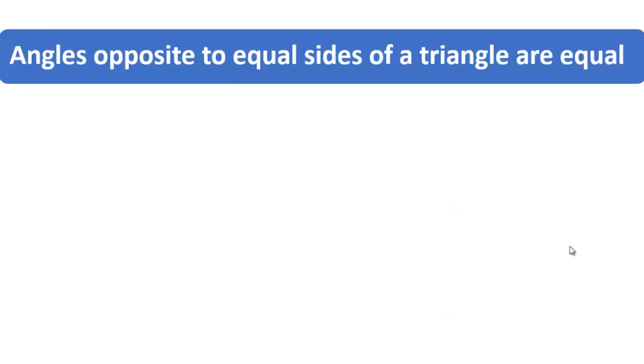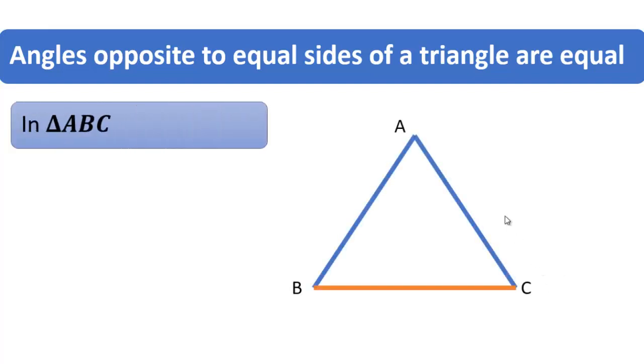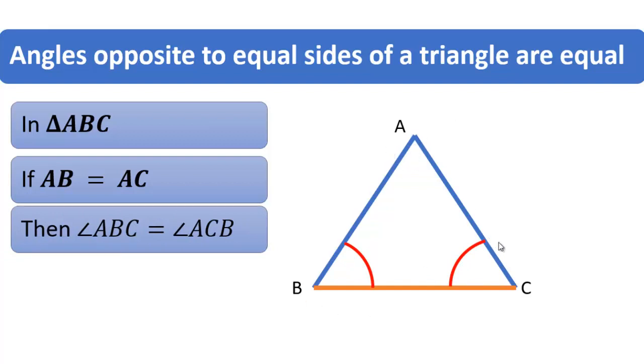Property one is angles opposite to equal sides of a triangle are equal. That is, in case you have a triangle ABC with side AB equal to AC, then the opposite angles ABC and ACB will be equal. We will call it property one.